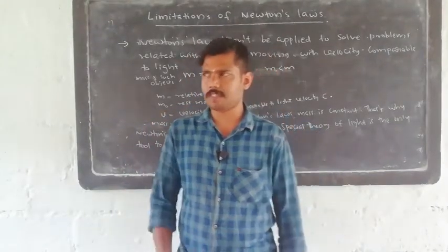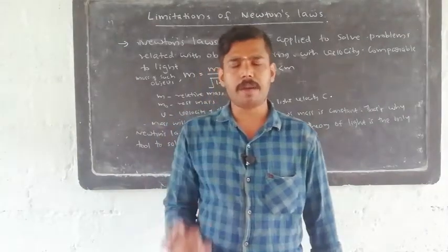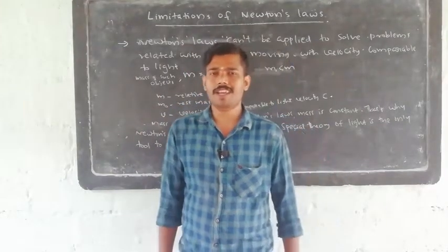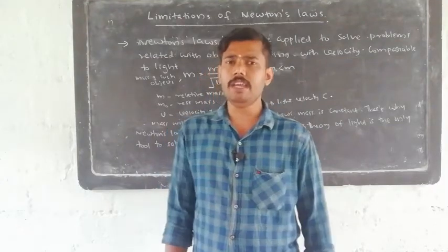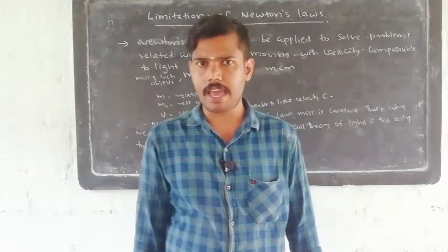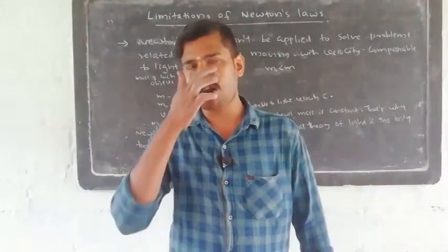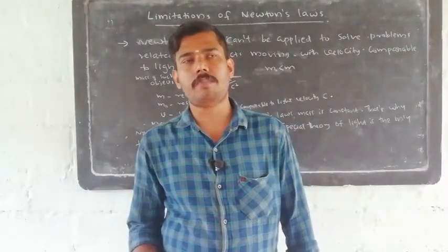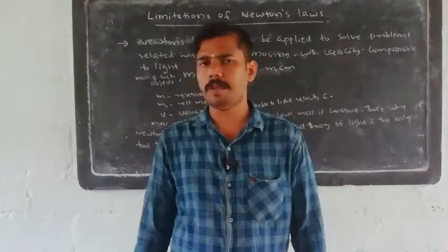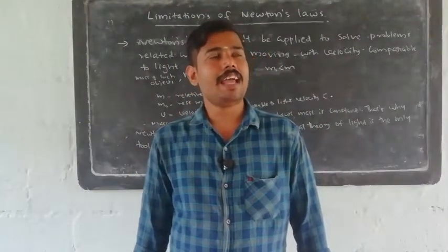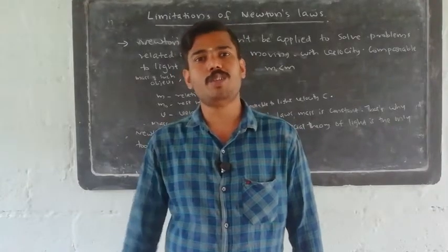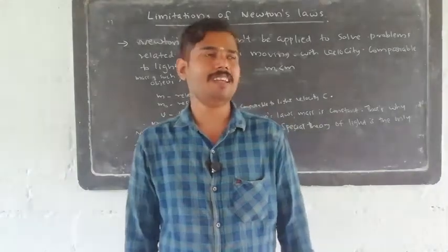In Newton's second law, F equals ma, and m is constant. From that equation, acceleration equals F divided by m. Since F and m are both constant, that's why we can say F is constant and acceleration is constant. That's why we can explain that the object's acceleration is constant.